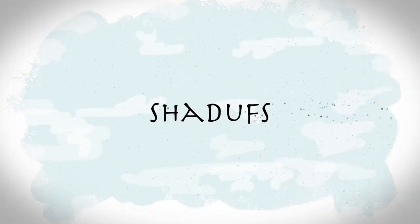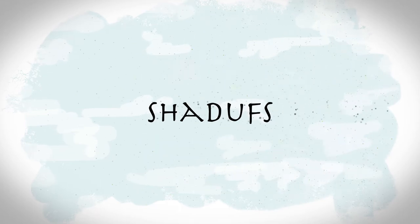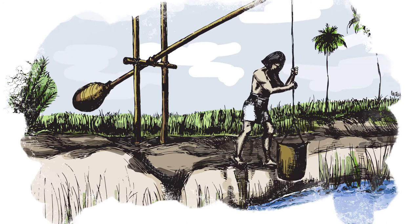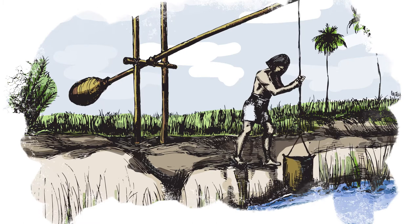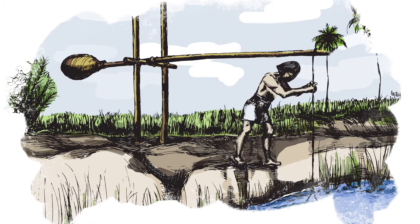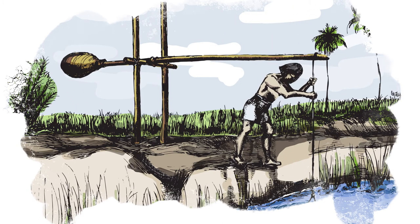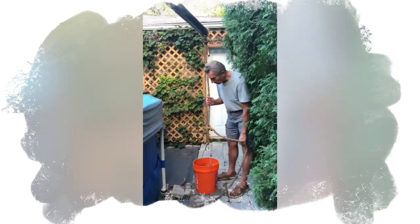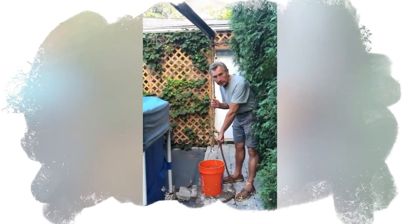A shadoof is a long pole balanced on a cross beam with one arm of the pole extending farther from the cross beam than the other. A bucket and rope are attached to the long arm and a counterweight is attached to the short arm. The counterweight is used to offset the weight of water being lifted by the bucket. I do have a 5 gallon bucket of water.